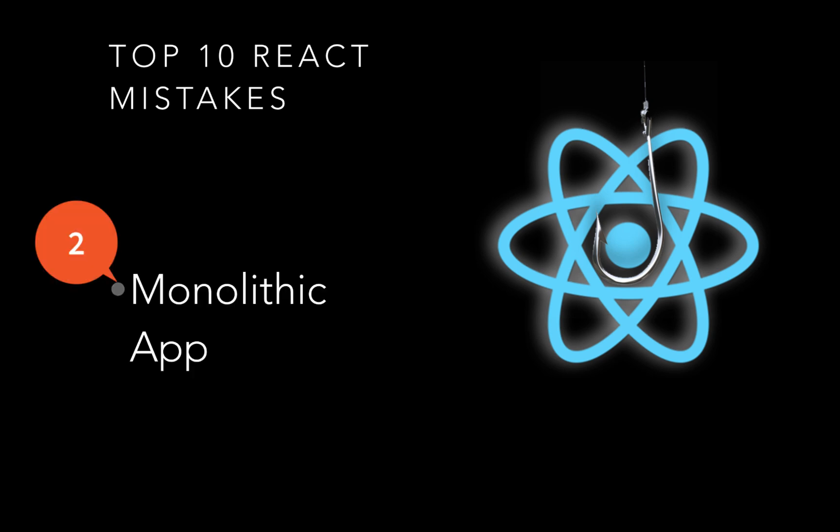The second mistake a lot of people make is not leveraging React's component power. You can componentize everything. However, a lot of people make monolithic applications, putting everything in one page. Or even if they have components, they don't componentize things enough. For example, when you get a design, you need to identify multiple things.